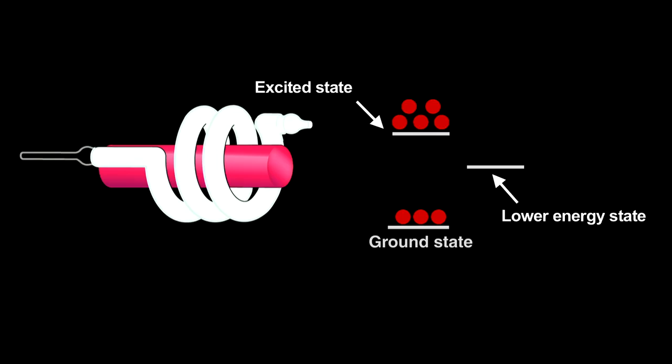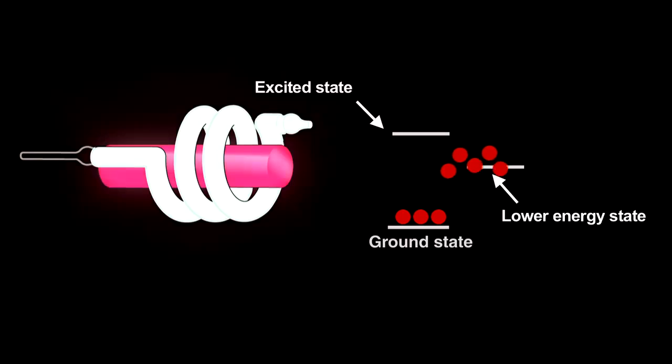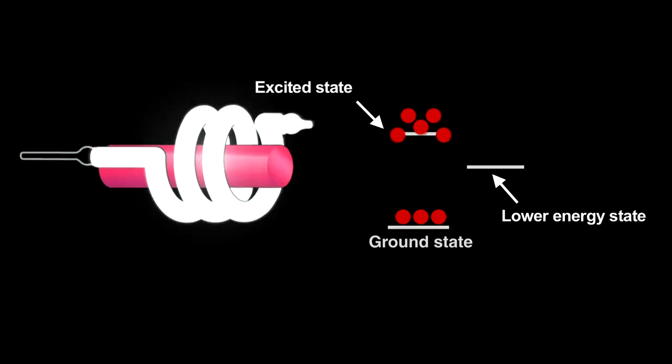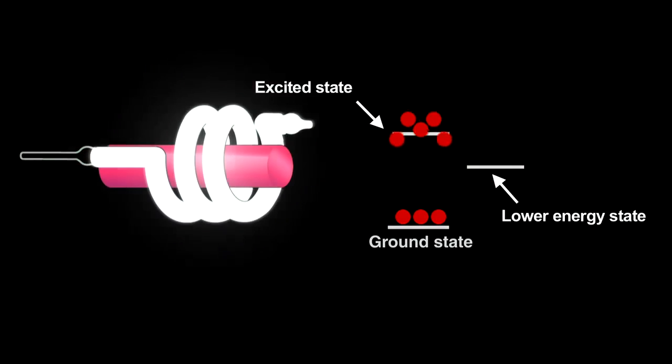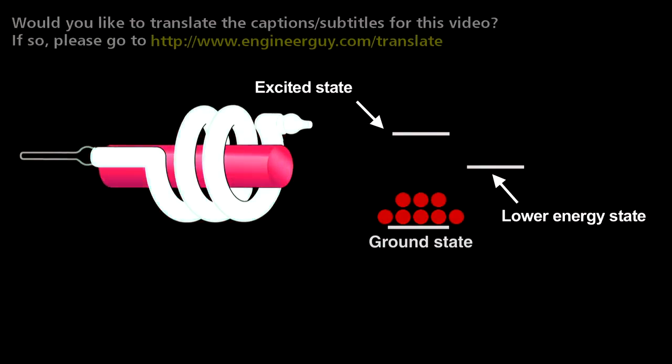Electrons from a population inversion returning to the ground state release light that starts an avalanche called stimulated emission. The photon produced when an electron decays induces other excited electrons to simultaneously decay and release nearly identical photons. That creates coherent light, meaning that the crests and troughs of every light wave in the beam match up.